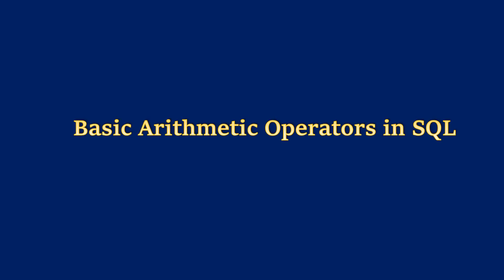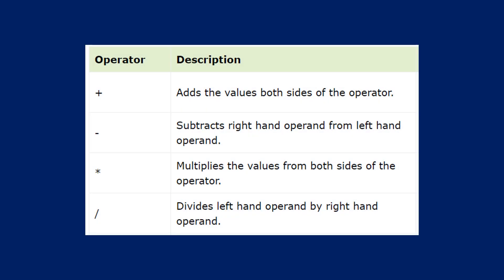Basic arithmetic operators in SQL are used in databases to perform basic mathematical operations on numerical data types. Let's see four basic operators: addition, subtraction, multiplication, and division.